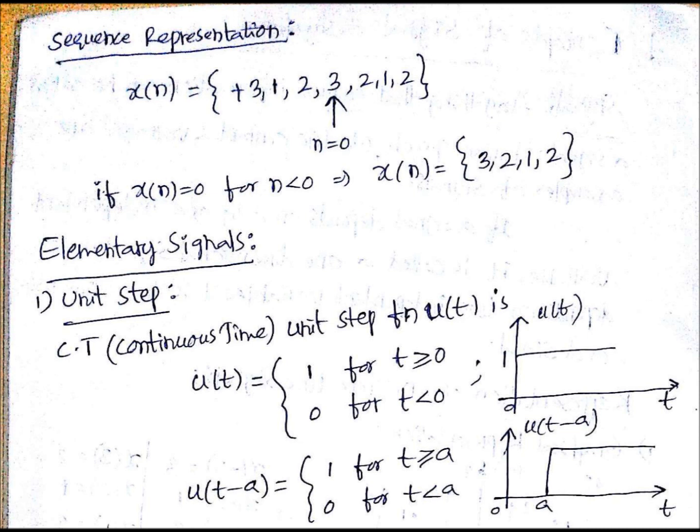In that case, you can write x(n) equals 3, 2, 1, 2. That means at n equals 0, x(0) equals 3, then x(1) equals 2, and so on. Only right side terms are there, then there is no need to put arrow, because there are no negative time steps.